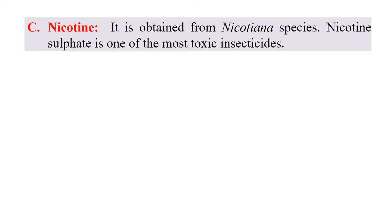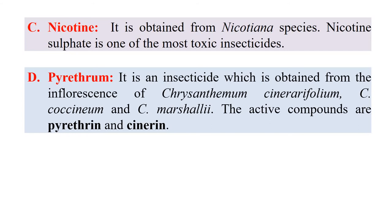Another example is Pyrethrum. This insecticide is obtained from the flowers of Chrysanthemum cinerariaefolium, Chrysanthemum coccineum, or Chrysanthemum marshallii. The active compounds in Pyrethrum are Pyrethrin and Cinerine, which act as insecticides obtained from a biological source, making Pyrethrum a bio insecticide.